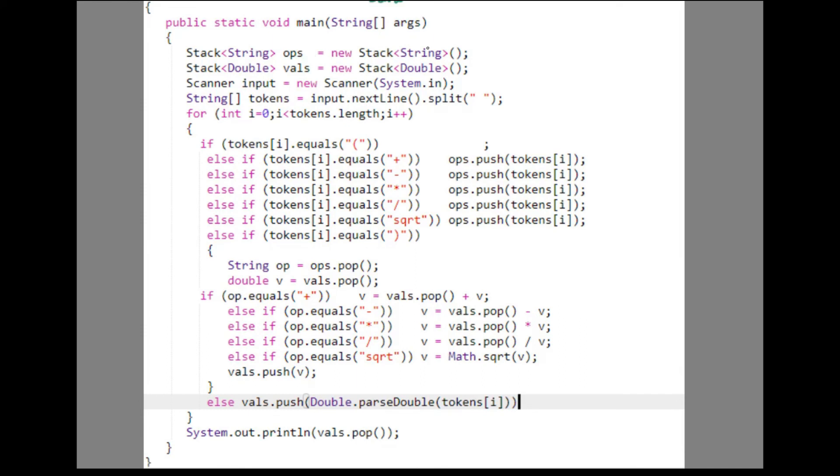First we are declaring an operator stack. And then this is the value stack. This is just to read the input delimited by spaces. With a for loop we are scanning each token. So if you encounter a left parenthesis just do nothing. Then in this series of else if we are going to consider the operator cases. The logic for pushing the numerical values into the value stack is placed in the final else condition. So this else if is where we perform the evaluation.